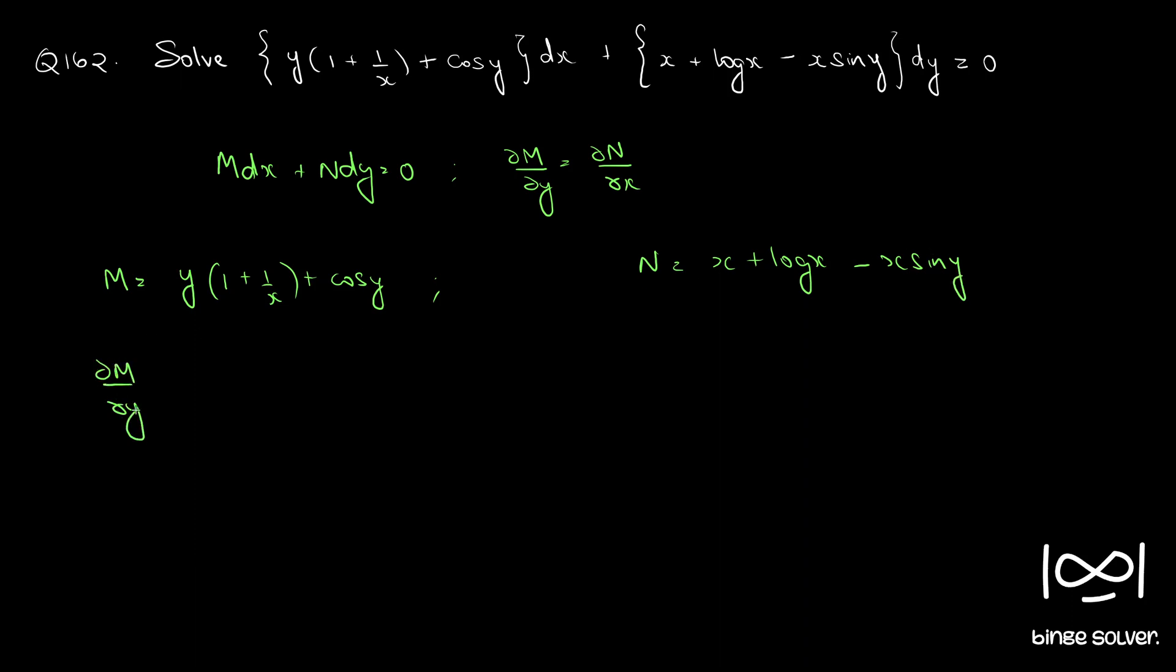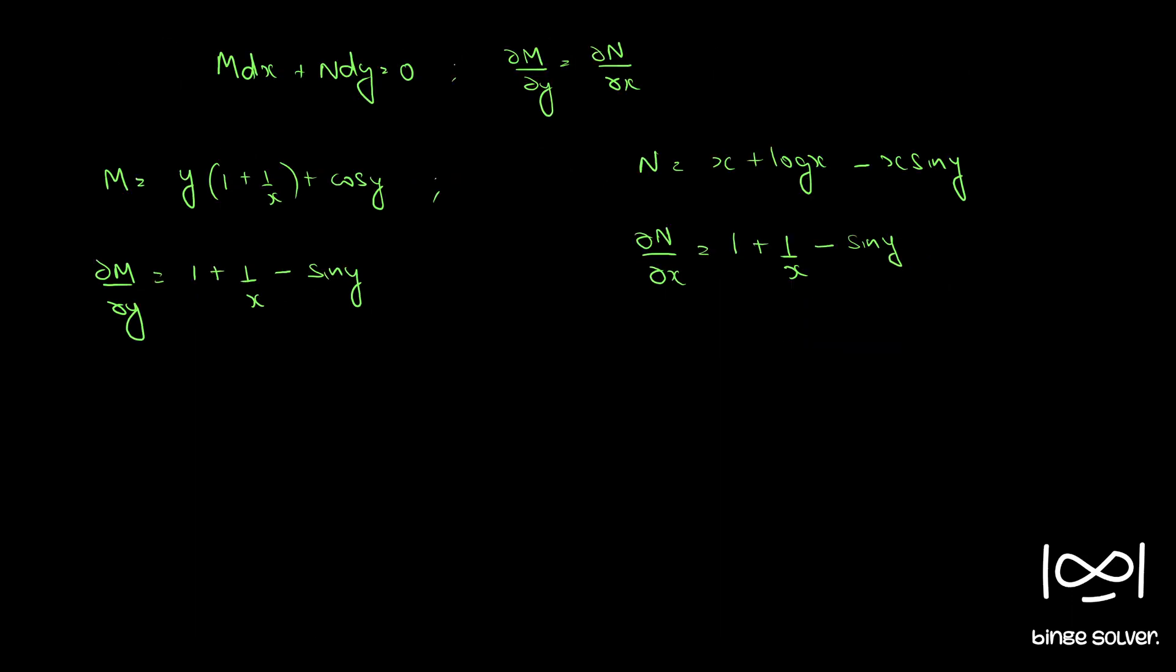So ∂M/∂y, partially differentiating M with respect to y. This becomes a constant, so differential of constant times y is constant. 1 + 1/x plus, differential of cos y is minus sin y. And ∂N/∂x is 1 + 1/x minus sin y. This is a constant, so sin y. As you can see, therefore ∂M/∂y equal to ∂N/∂x. Therefore, the differential equation is exact.